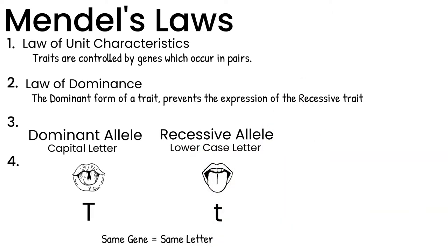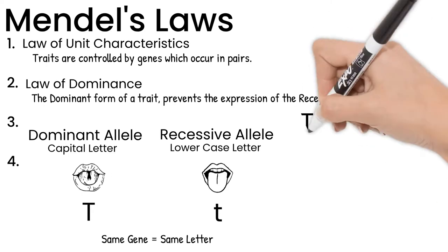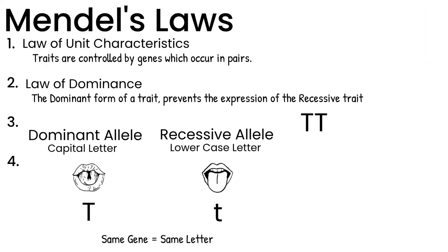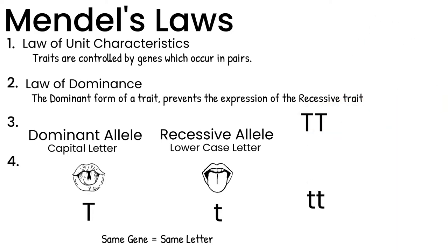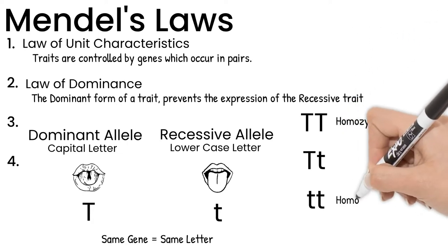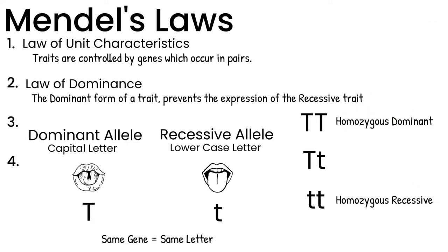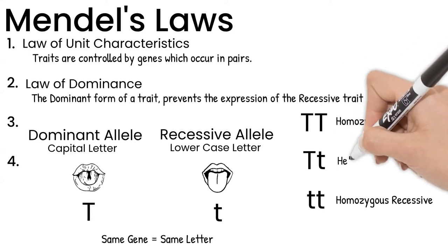As our genes are in pairs, we have the option to have two capital T's — dominant alleles — two lowercase t's — recessive alleles — or one of each. If they're the same, it's called homozygous in genetics: homozygous dominant or homozygous recessive. If there is one of each, it's called heterozygous.